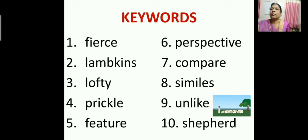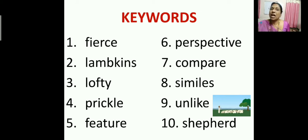Next is Prickle — P-R-I-C-K-L-E — which means a sharp pointed object, or a sharp pointed growth which you see on a rose plant. Those are the sharp thorns on the stem. Next is Feature, which means a characteristic — how two things are the same or different; for that we use the word Feature.